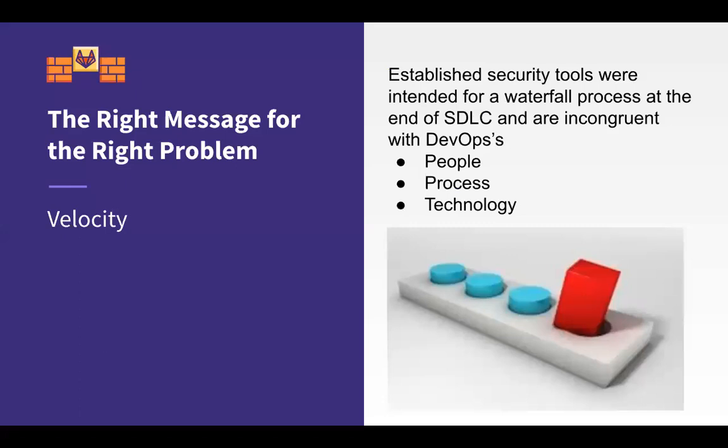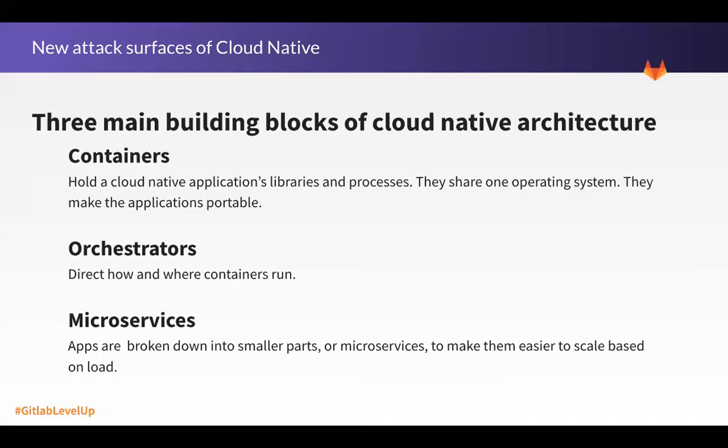I want to help you with the right message for DevSecOps. Traditional security tools were intended for a waterfall process — you do all your development, then scan everything in a test environment before going to production. That method is really incongruent with the DevOps people, processes, and technologies. That's the square peg of security into the round hole of DevOps — they just don't fit well.